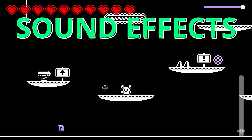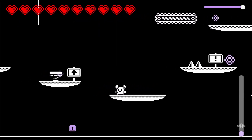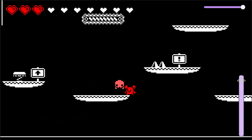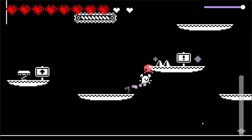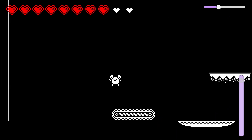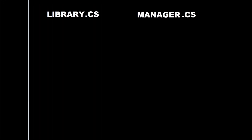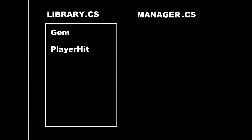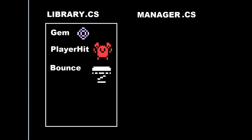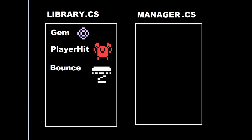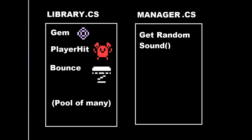By the end of this video we're going to be adding sound effects to our game and also adding in a volume slider. The plan is we're going to have a library script and a manager script. In our library we'll store lists for our sounds — for example a player hit sound effect, gem sound effect, and bounce sound effect. Our manager will grab from our pool of sound effects in the library and get a random sound, so each time we do an action it doesn't sound the same and get repetitive. We're also going to add a slider to set our volume.